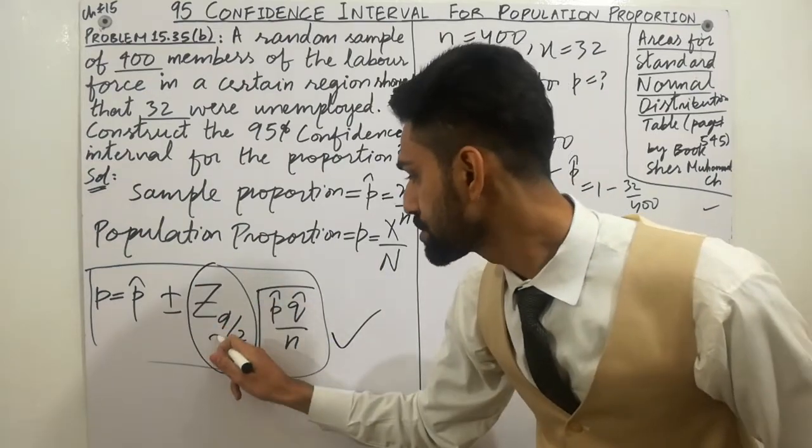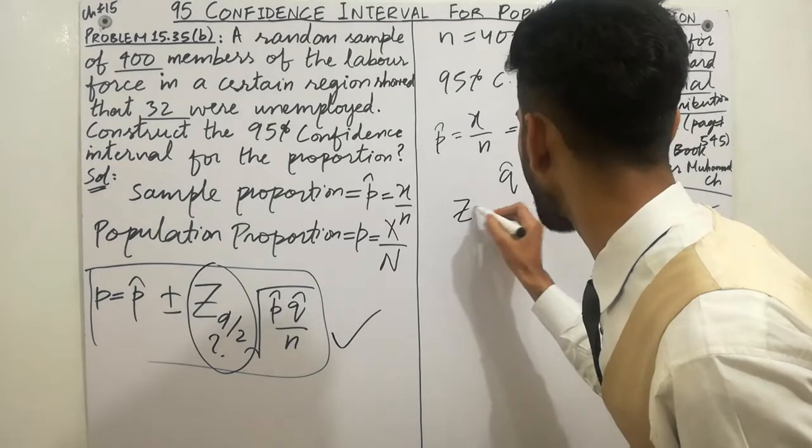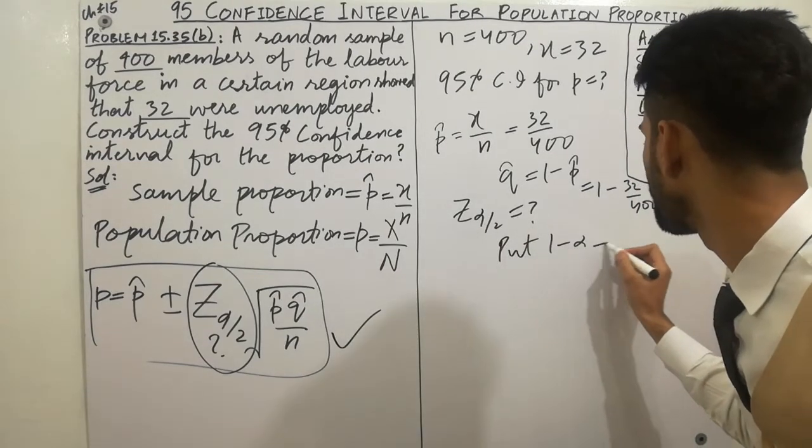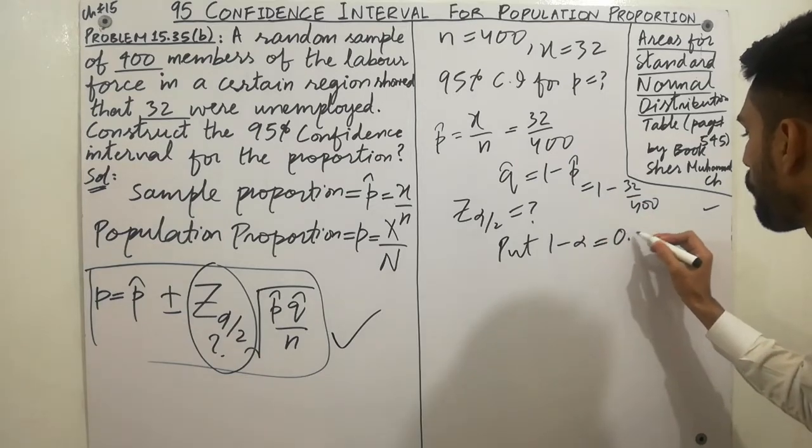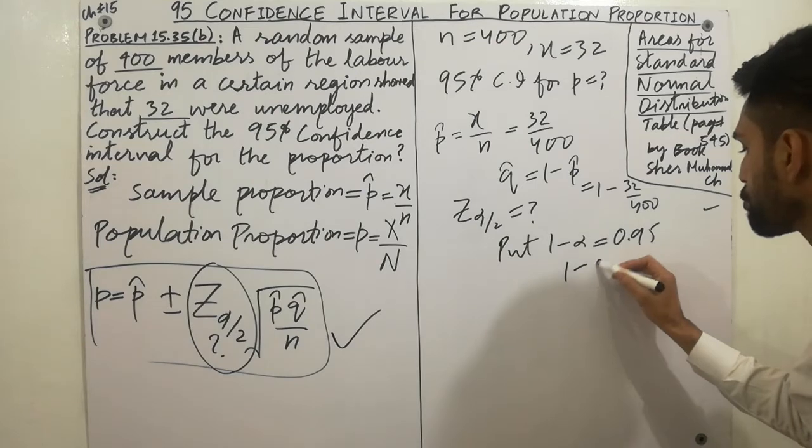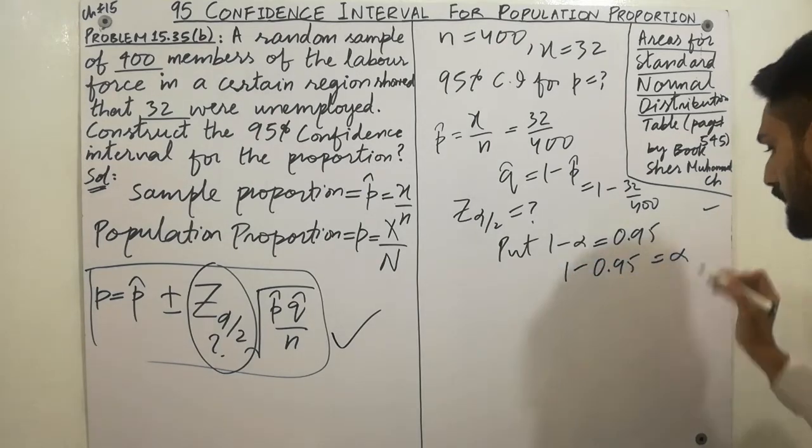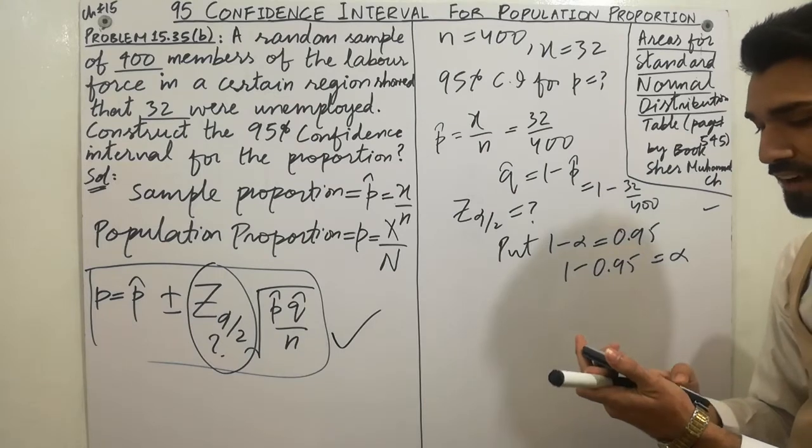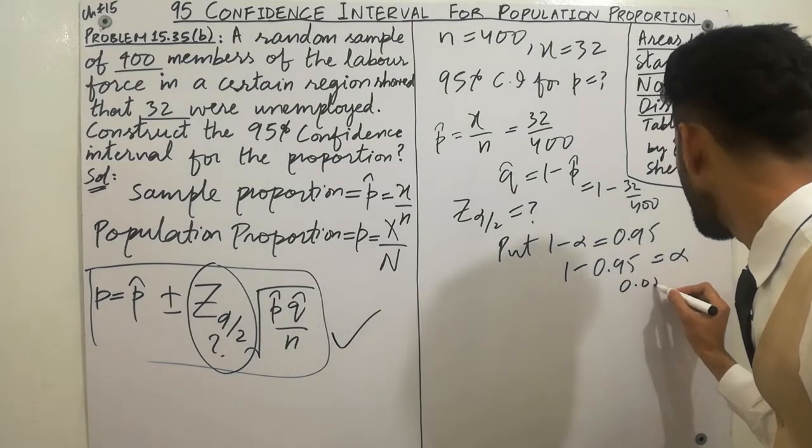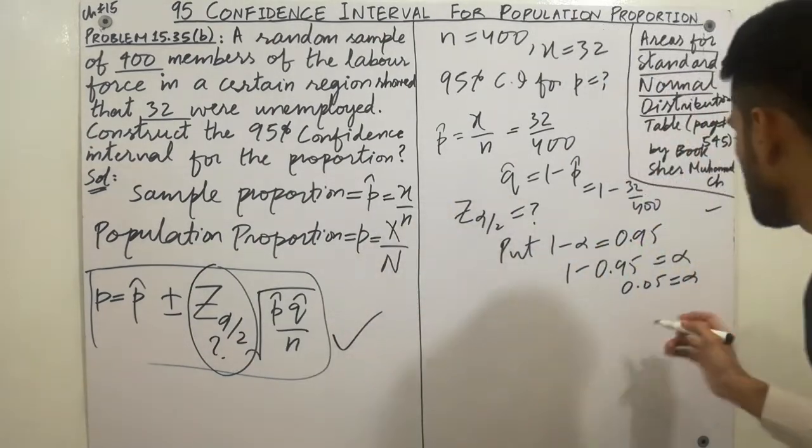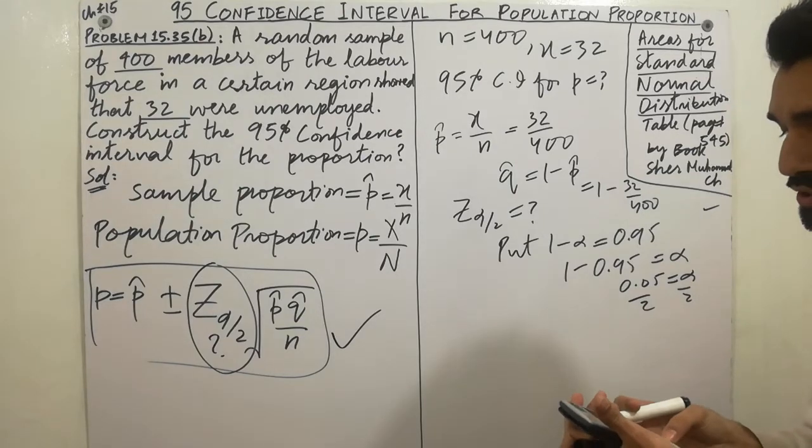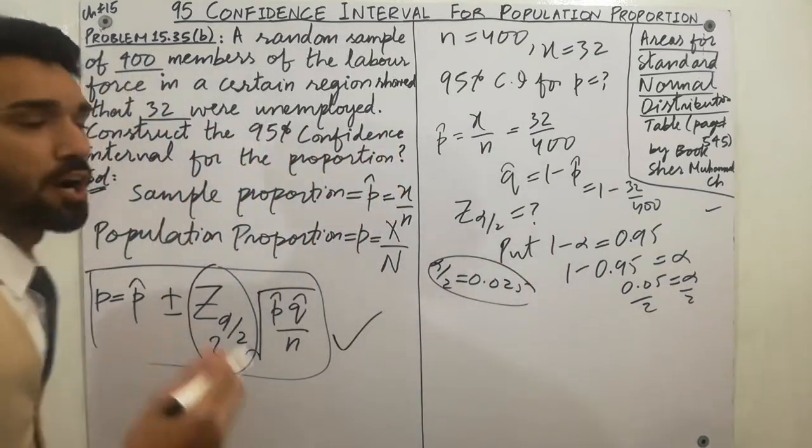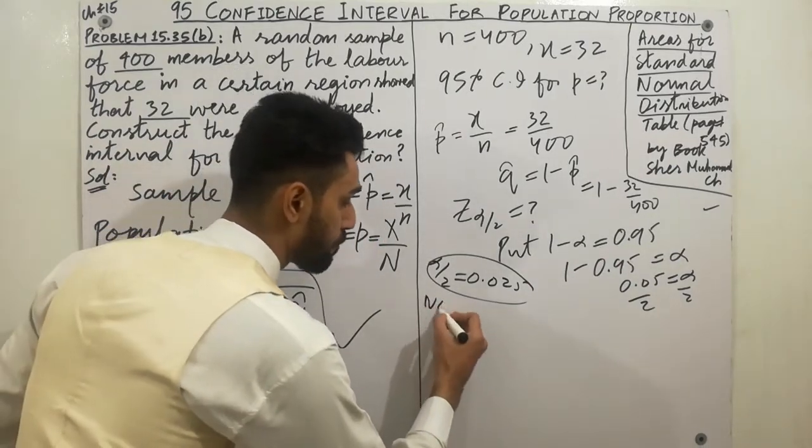You have to calculate now z alpha by 2. Very simple, shortcut method - 1 minus alpha is equal to the given value, 95 percent or 0.95. So alpha will be 0.05. But you have to find alpha by 2, so divide by 2 - 0.05 divided by 2 you get the value 0.025. So alpha by 2 is equal to 0.025. Important point - important note.